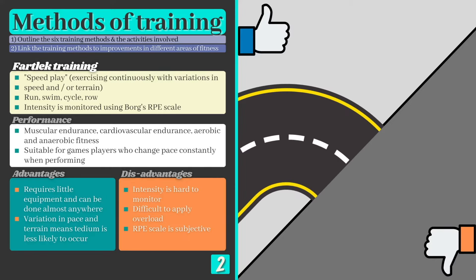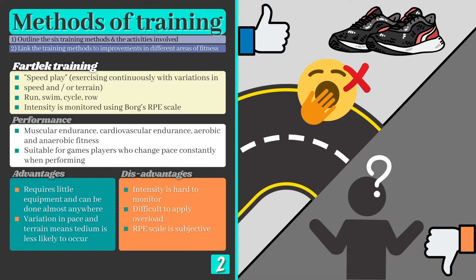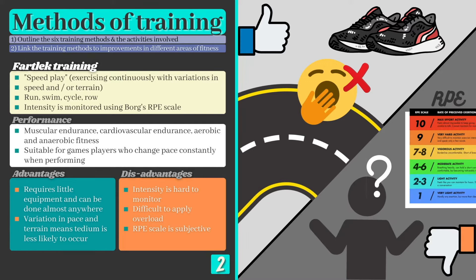Advantages: It can be done almost anywhere, it requires little or no equipment, and variation in pace and terrain means tedium is less likely to occur. However, training intensity is difficult to monitor and the RPE scale is subjective, which makes it difficult for athletes to apply overload.